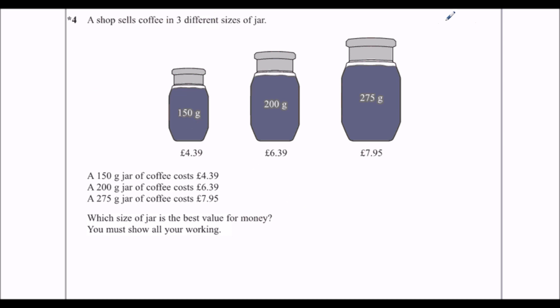What I like to do here is work out the price per, in this case, gram. So how many pence per gram are each of these jars? We want to pay the least amount of money per gram of coffee, and that one will be the cheapest.